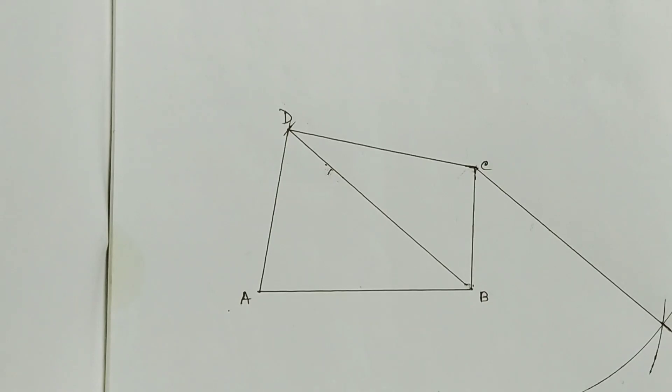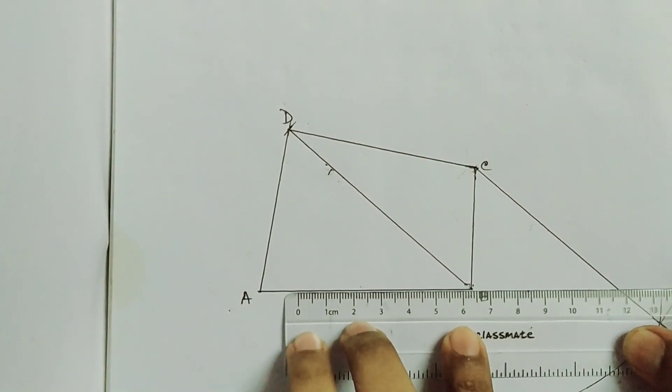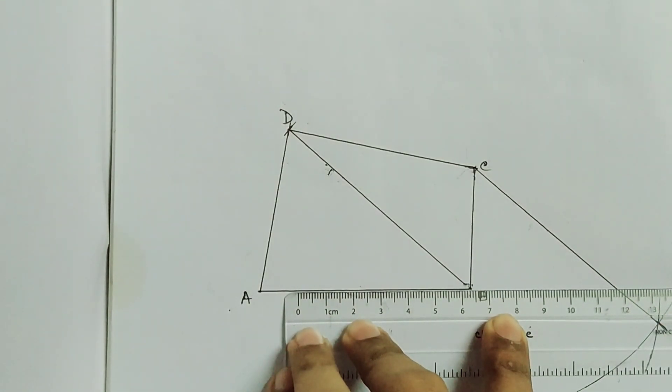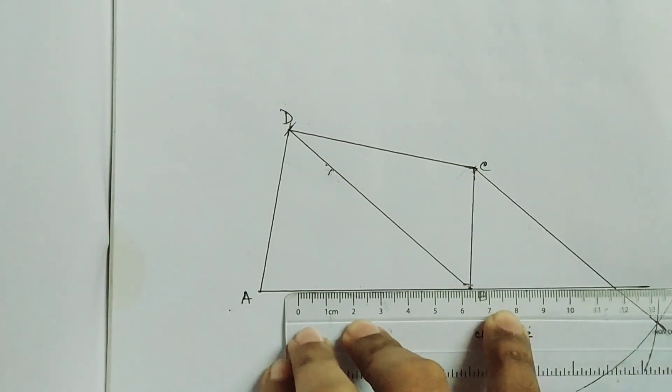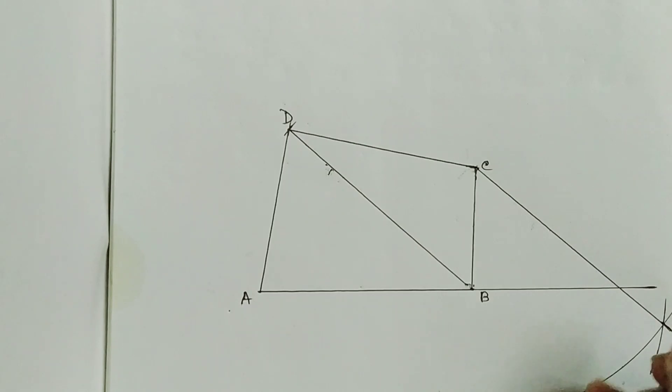Then we just have to extend the base AB, so that it can cut that parallel line. I am extending this one and it is cutting this parallel line at the point E.